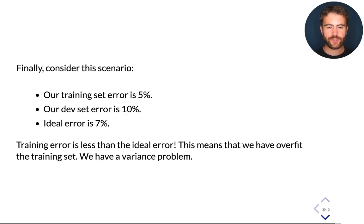We may also have an interesting scenario like this one. Suppose that we have a training set error of 5%, and a development set error of 10%, and our ideal error is 7%. So here, we're doing better than the optimal performance on our training set. So we're doing better than human performance on our training set, and our development set error is higher. So this is also actually an instance of a variance problem, because the reason why our performance on the training set is better than optimal is because we are overfitting it. The model is simply memorizing the training set, and therefore, this is again an instance of a variance problem.